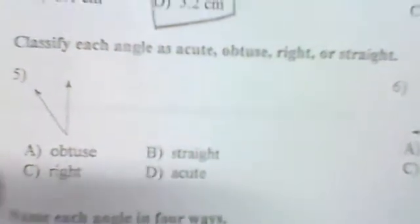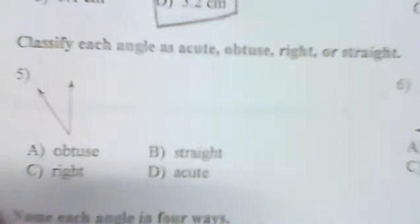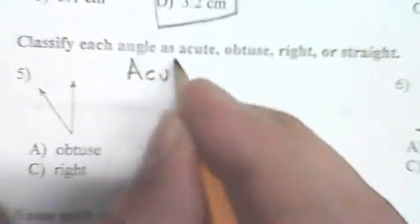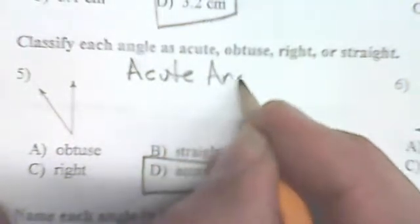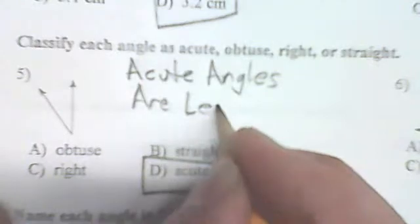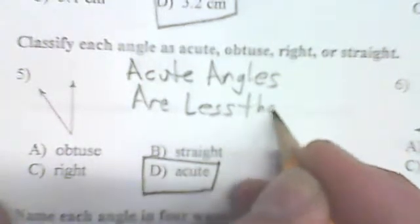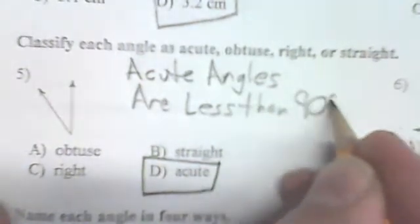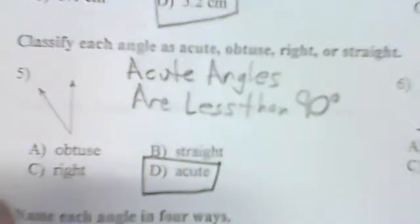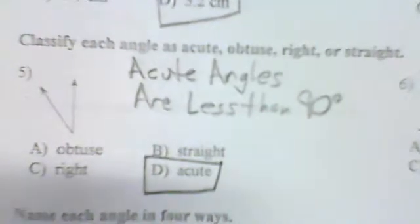We need to classify this angle as acute, obtuse, right, or straight. This one is acute. Acute angles are less than 90 degrees.